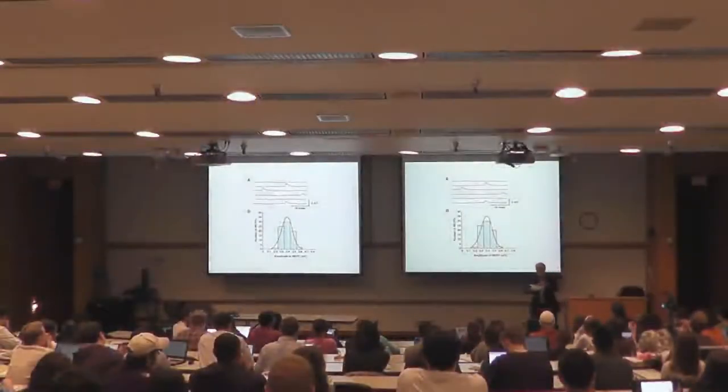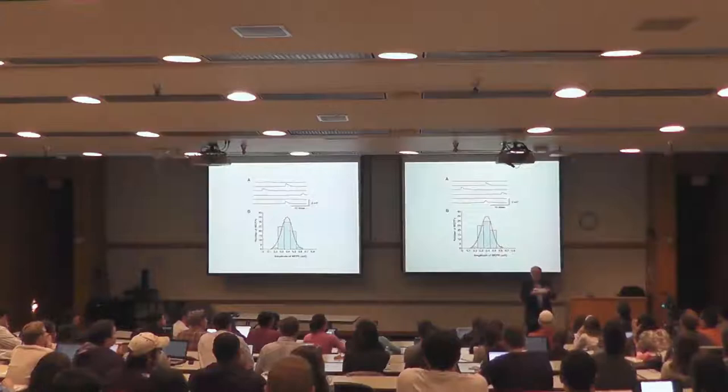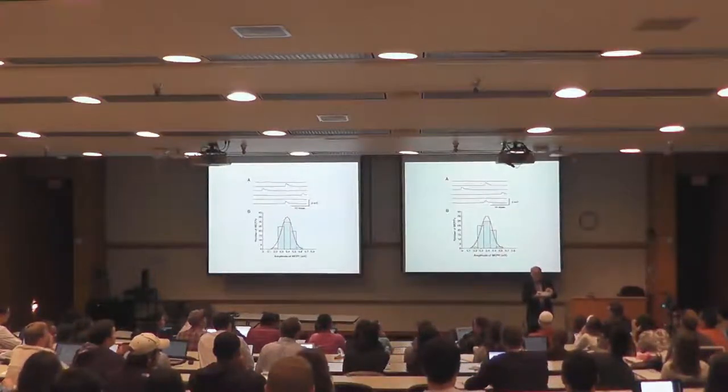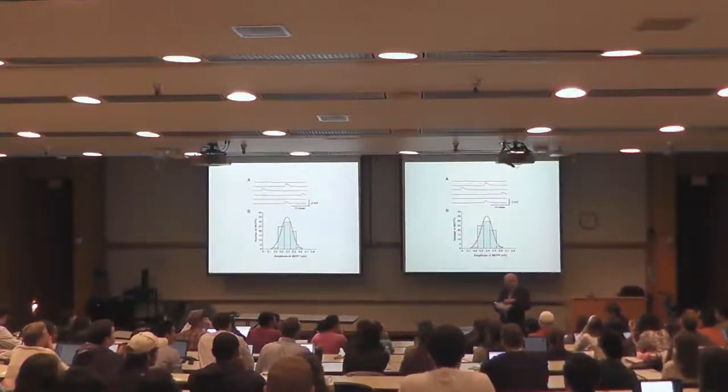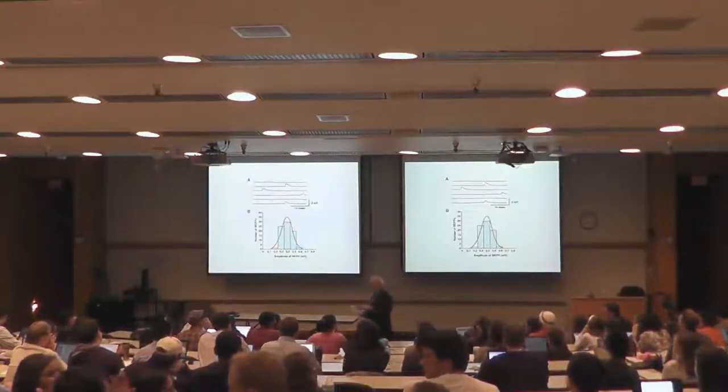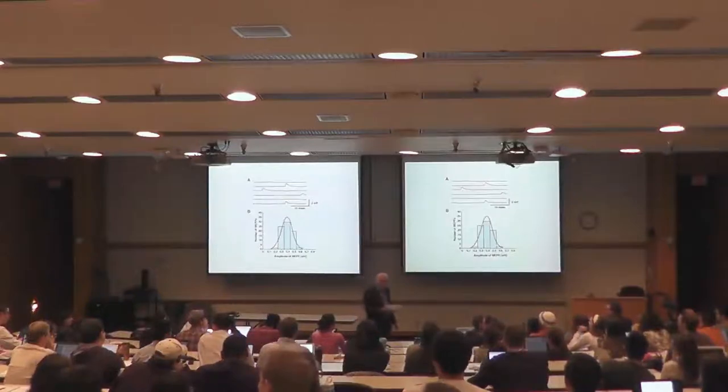Katz suggested that because of the high concentration of vesicles in the synaptic terminal and some basal calcium, occasionally some vesicles are spontaneously released. Just by chance, about once every 50 milliseconds, a vesicle releases its contents. This is the spontaneous release underlying miniature end plate potentials.